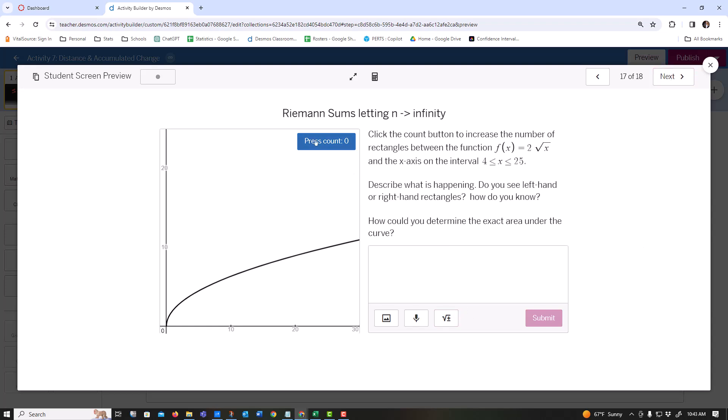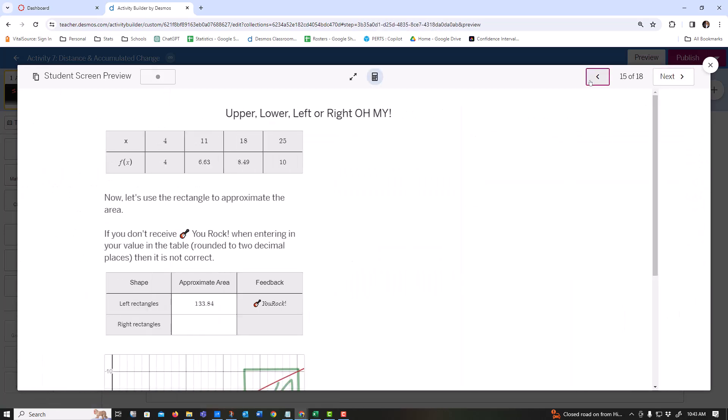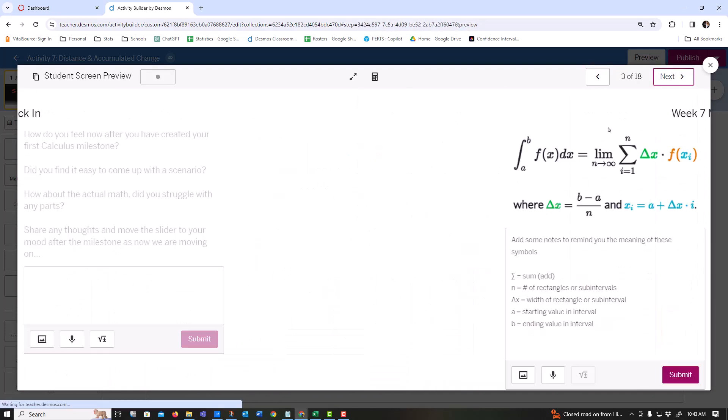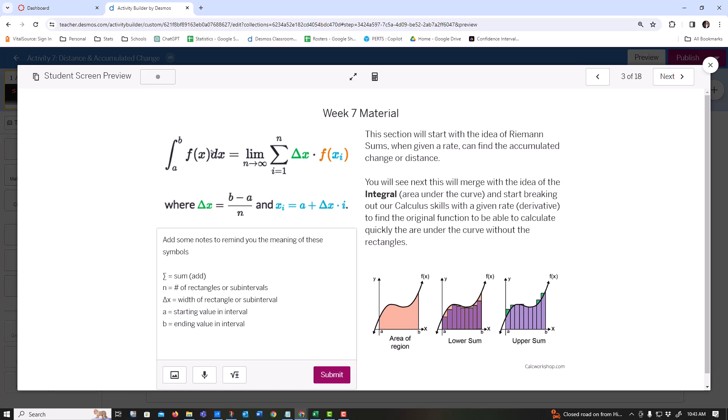What this is showing you is that as the number of rectangles go to infinity, you're going to get this smooth curve, which is where we are going. That's the point: we want more rectangles. You're summing up the width times the height. Then, coming up, we're going to take the limit and do some calculus with it.